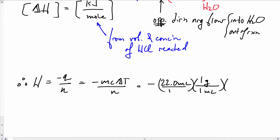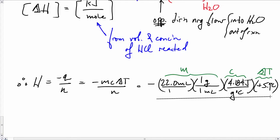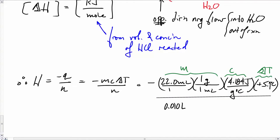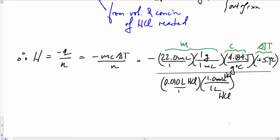Here we can see the calculation. We'll use the volume of the total solution. Use the density of the solution—call it the same as water. The heat capacity of water and ΔT. Divide this by the number of moles of hydrogen chloride that were there. Use the concentration and the volume. Let's check the units.